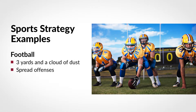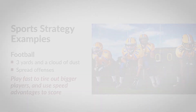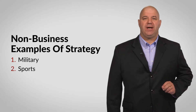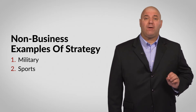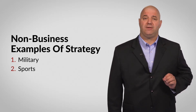To counteract this strategy, teams that did not have a lot of big, strong athletes developed a new strategy. Spread offenses were used to create more space on the field and allow smaller, quicker players to make plays outside the tackle box. This strategy takes advantage of bigger, stronger, but often slower players — the idea is to play fast and in space, to tire out bigger players and use speed or quickness advantages to score more points. As these two examples demonstrate, strategies often evolve over time in response to advantages or disadvantages relative to the competition.